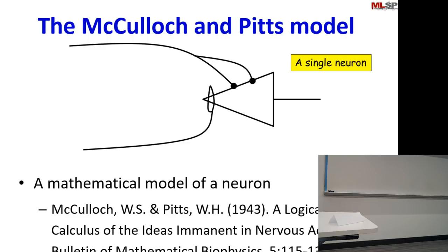Here's the basic computational model for each individual neuron. You have a unit which is going to fire if it gets two or more inputs. It can get inputs from many different connections, and they can have two kinds of connections.